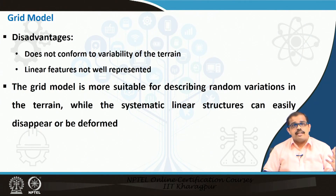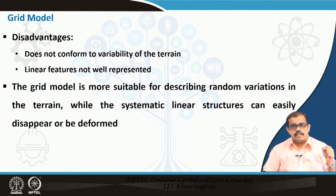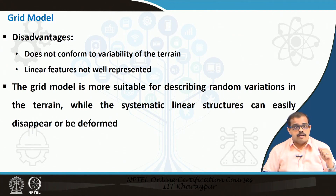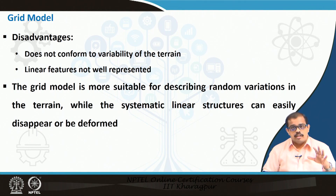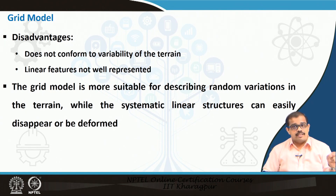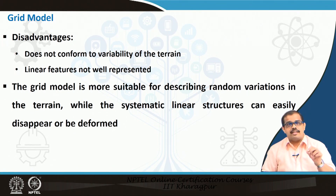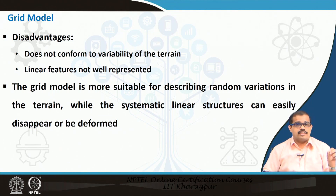When looking at disadvantages, the grid model does not conform to variability in terrain — the variability of terrain cannot be captured using a grid model. Linear features are not well represented. The grid model is more suitable for describing random variations in the terrain, while systematic linear structures can easily disappear or become deformed. As shown when converting a vector to raster, a road represented in a raster is quite deformed. That is why the grid model is extremely disadvantageous in terms of usage.